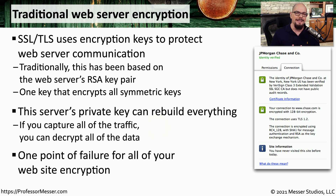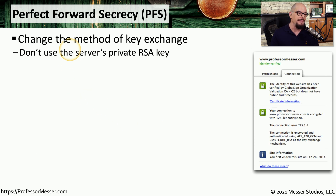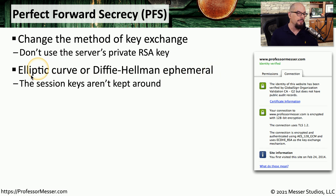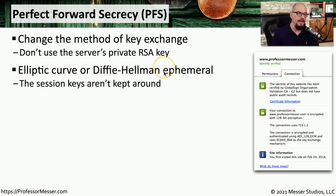For many websites, this creates a single point of failure for all of the encryption. So there needs to be some other way to provide encryption to the server that would prevent somebody from being able to decrypt it after the fact. To work around this problem, many web servers have implemented Perfect Forward Secrecy, or PFS. This changes the encryption process so that you're not using the same private key every time to transfer the symmetric key across the network. This uses an algorithm called elliptic curve Diffie-Hellman ephemeral — here is a certificate showing it's using ECDHE, which stands for elliptic curve, Diffie-Hellman, ephemeral.